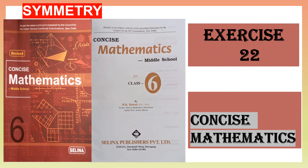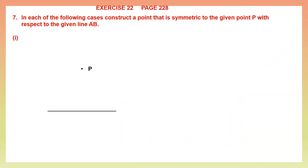Hello students, let's continue with symmetry, exercise 22, page number 228. This is question 7. In each of the following cases, there are three questions given to us. In each of these, construct a point that is symmetric to the given point P. So a point P has been given to us here, and the line is also given to us. Now we need to construct a point that is symmetric to this point P, so we are going to do the construction now.